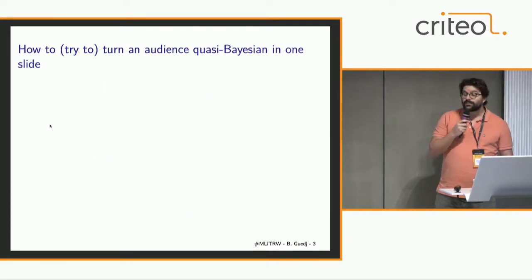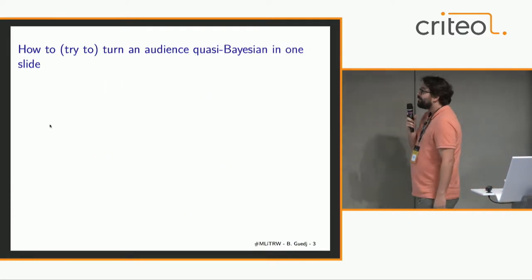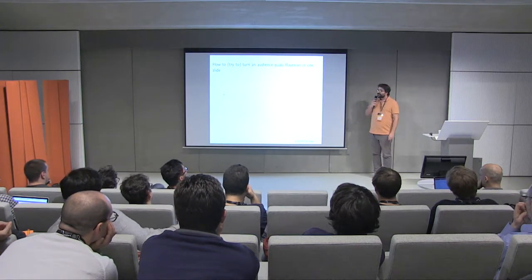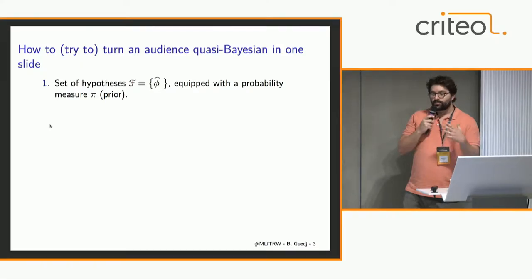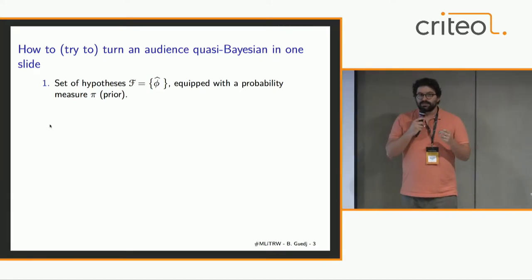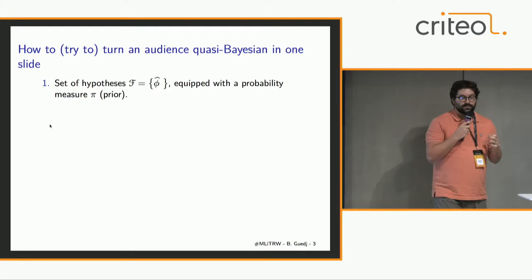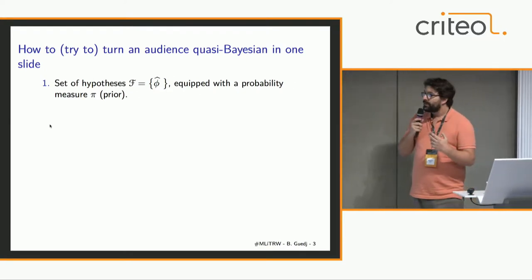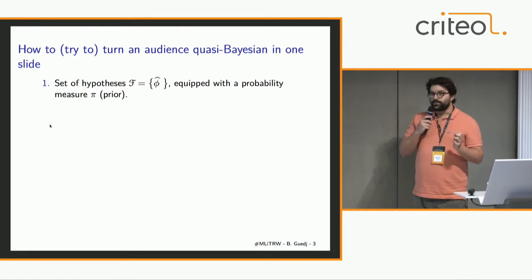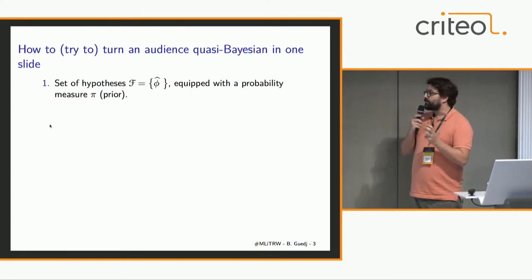So what is quasi-Bayesian? Let me try to convince you that it's an interesting way of performing learning. As in classical Bayesian learning, you would start with a prior. You would typically use a set of candidate predictors — candidate functionals — this set is calligraphic F. This set could be parameterized with some distribution, which we could call a prior to be consistent with Bayesian learning, but it's really just a distribution which allows you to sample efficiently this space.